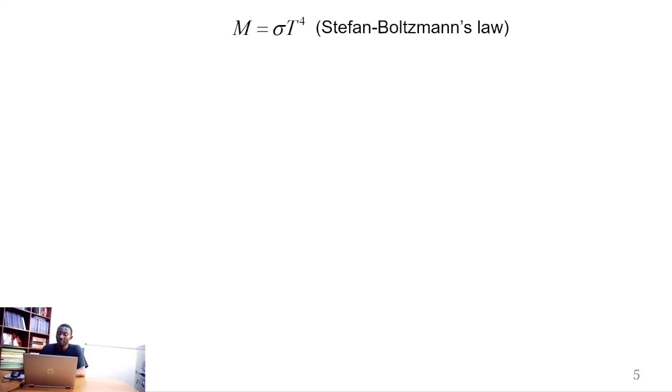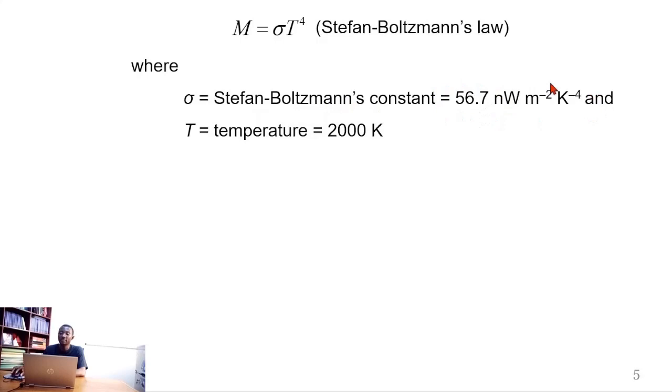So this is the Stefan-Boltzmann's law. The excitance, capital M, is equal to the Stefan-Boltzmann's constant times the fourth power of temperature. Where sigma is the Stefan-Boltzmann's constant, which has this value of 56.7 nW m⁻² K⁻⁴. And then T is the temperature, which in this case is 2000 Kelvin. So I will substitute both the Stefan-Boltzmann's constant and the temperature into the Stefan-Boltzmann's law.